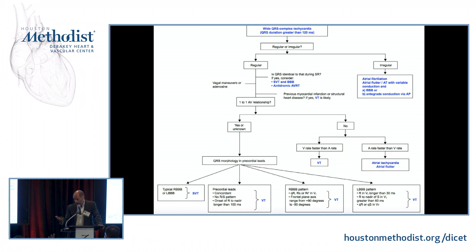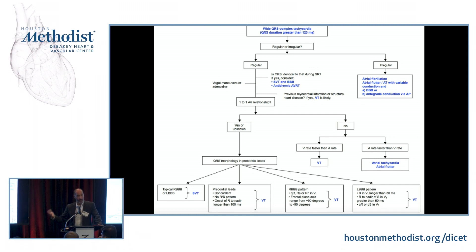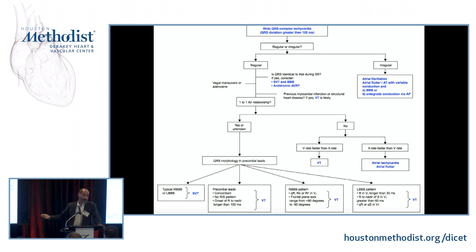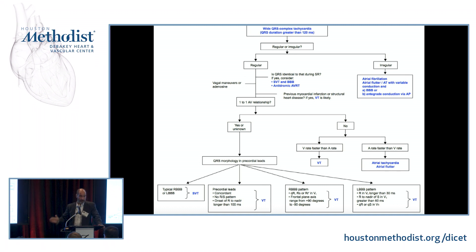The most effective way to treat polymorphic VT in the setting of long QT — magnesium and similar measures don't take you far. What you need to do is prevent those pauses by accelerating the heart rate. A quick intervention is isoproterenol. The most effective approach is to place a temporary wire and pace at 100. This will prevent those pauses and control the fluctuations of the QT interval.